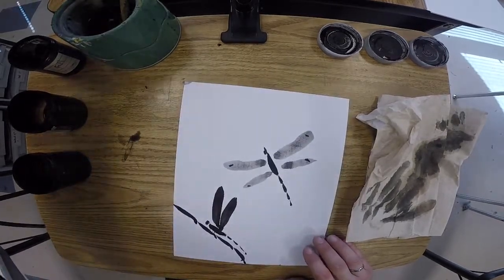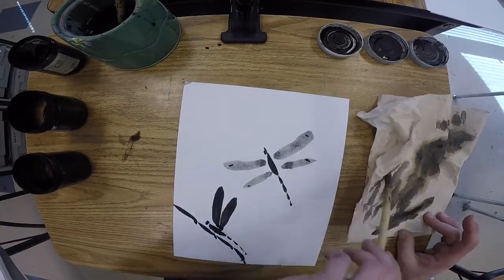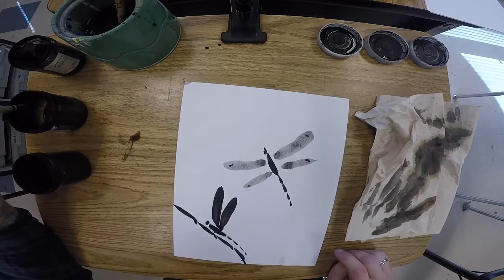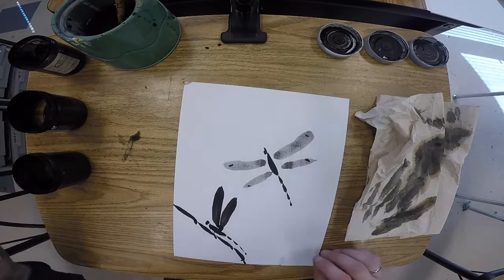Now I'm gonna do one more of these from a different angle. So again, I'm gonna make sure that I dip my fude in the right ink this time. We're gonna use the light, tip it with medium.